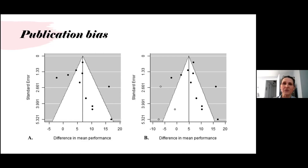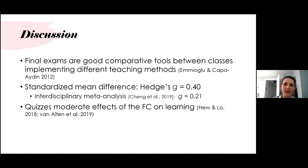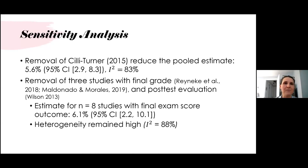We ran a sensitivity analysis including a leave-one-out for each study to see what would happen to the pooled estimate if we removed each study. One study with a 16 percentage-point difference between the flipped and lecture classes had excessive influence over the pooled estimate, and removing it reduced the pooled estimate to 5.6% and also reduced heterogeneity to 83%.